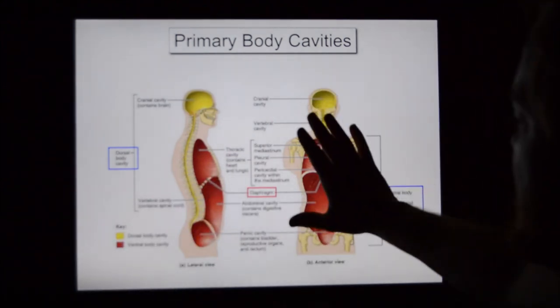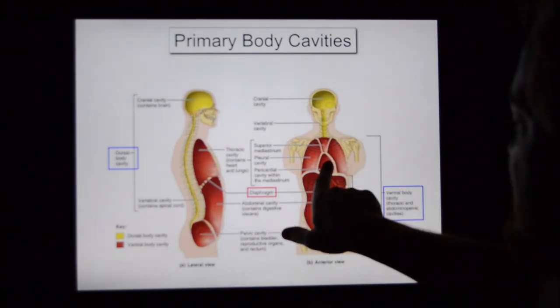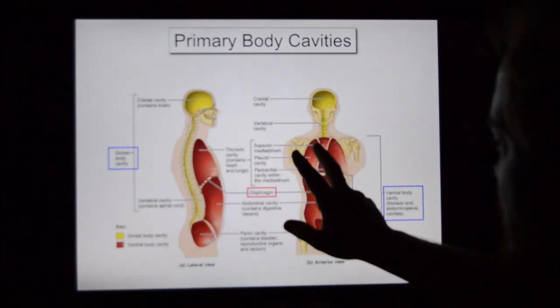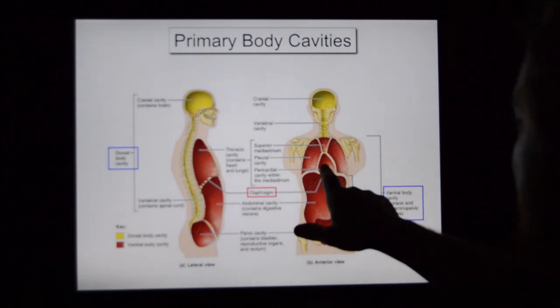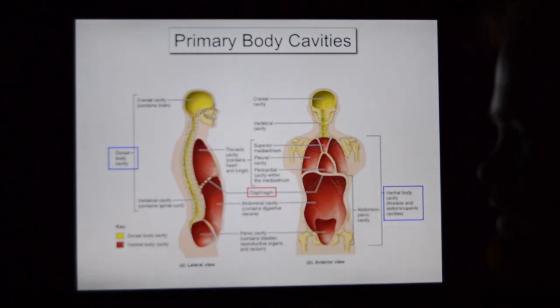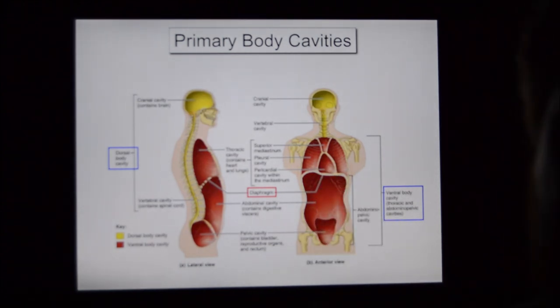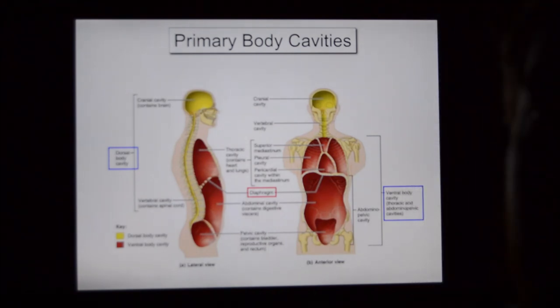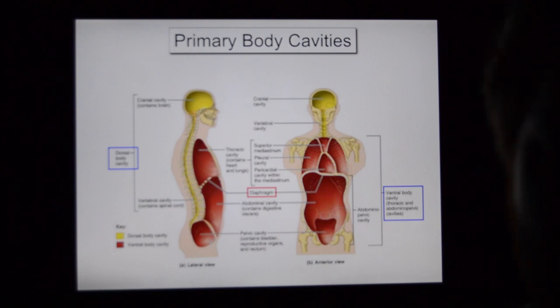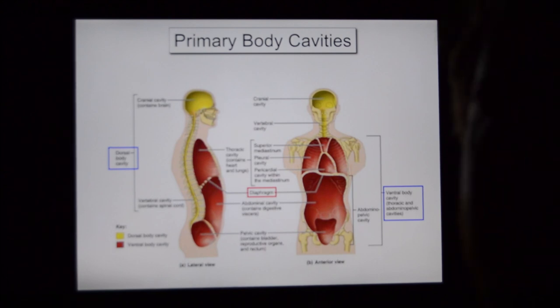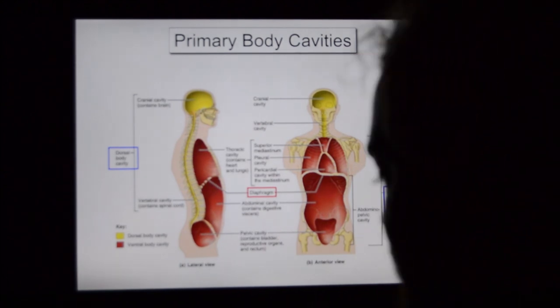We can further subdivide the thoracic cavity down into the right and left pleural cavities—pleural meaning lungs—and here in the center, pericardial. Some of this is similar to what we've done in lecture because these are very important concepts. This is important for lab and important for lecture, and you're going to see this on your lab test primarily.